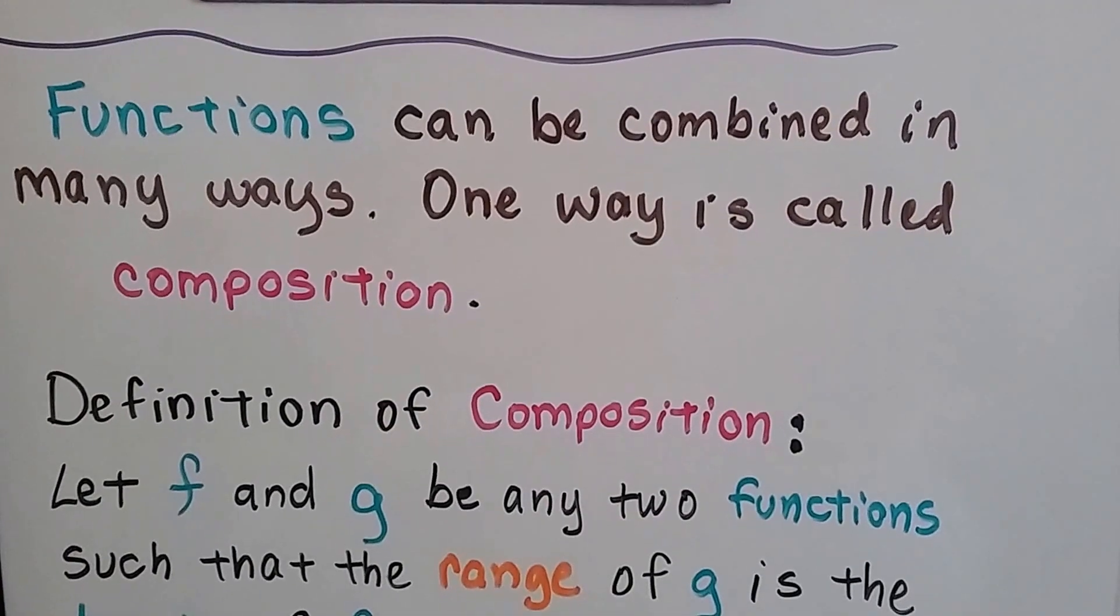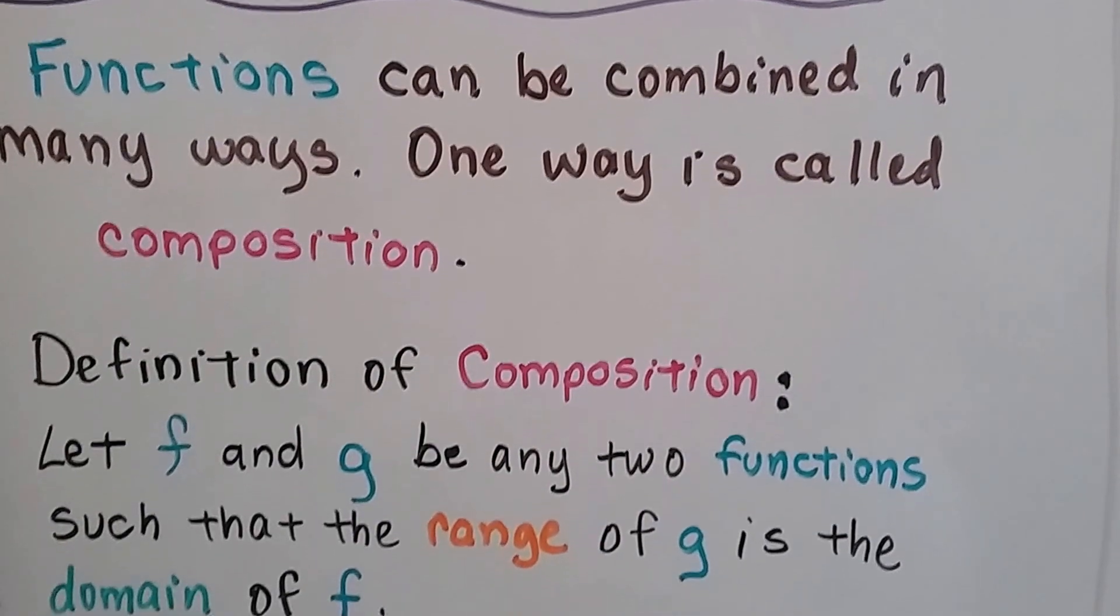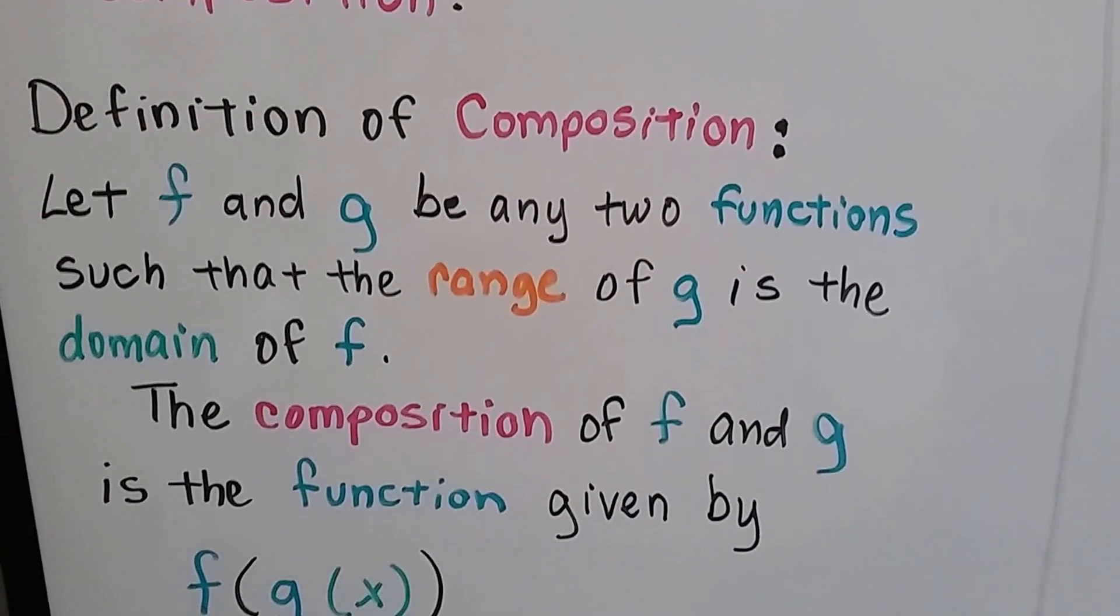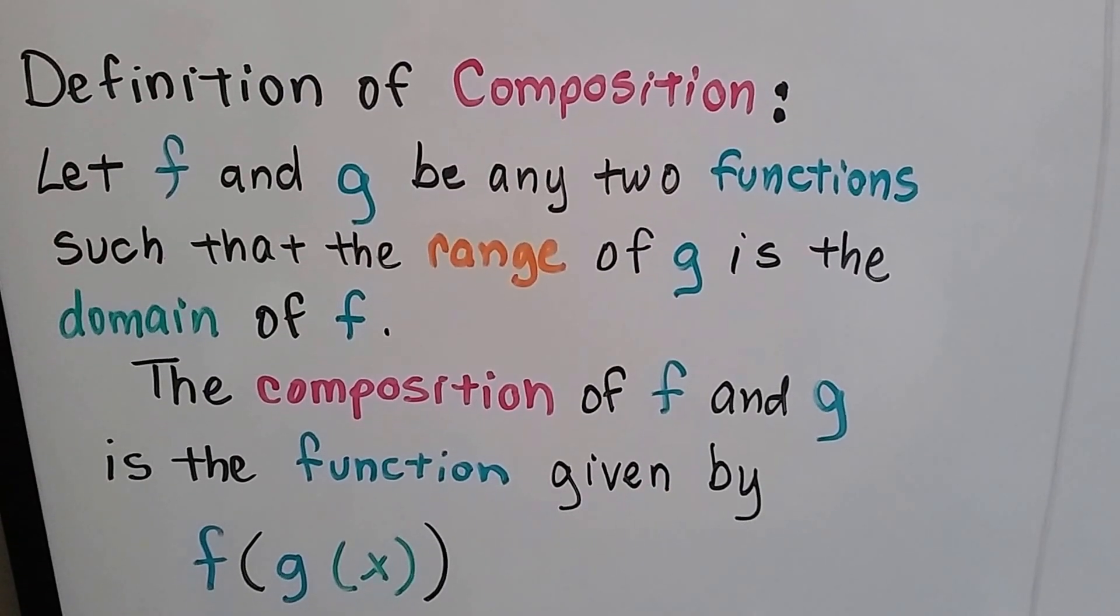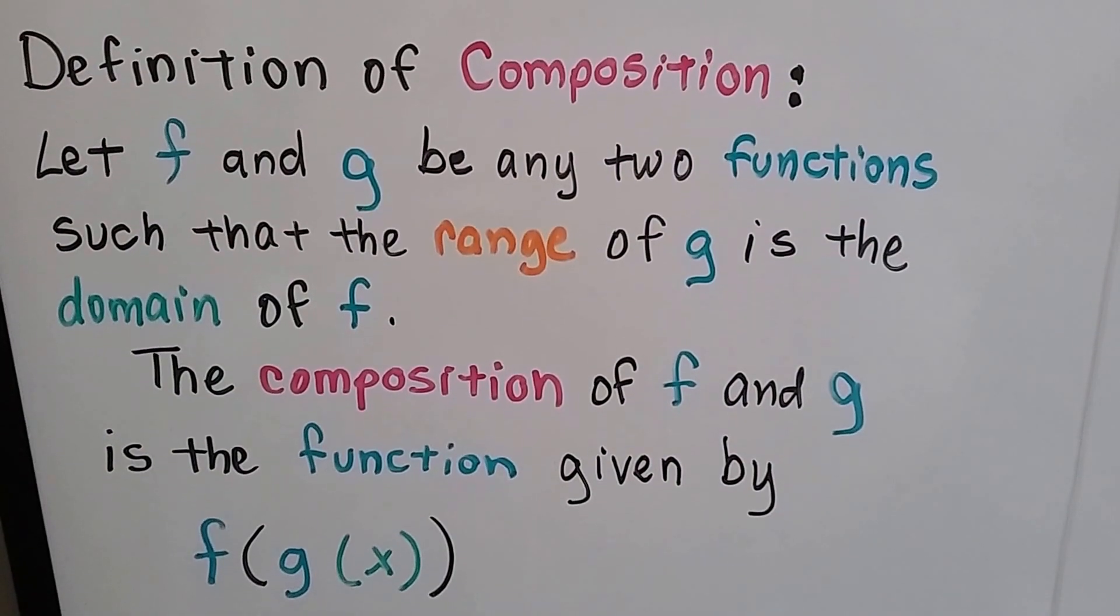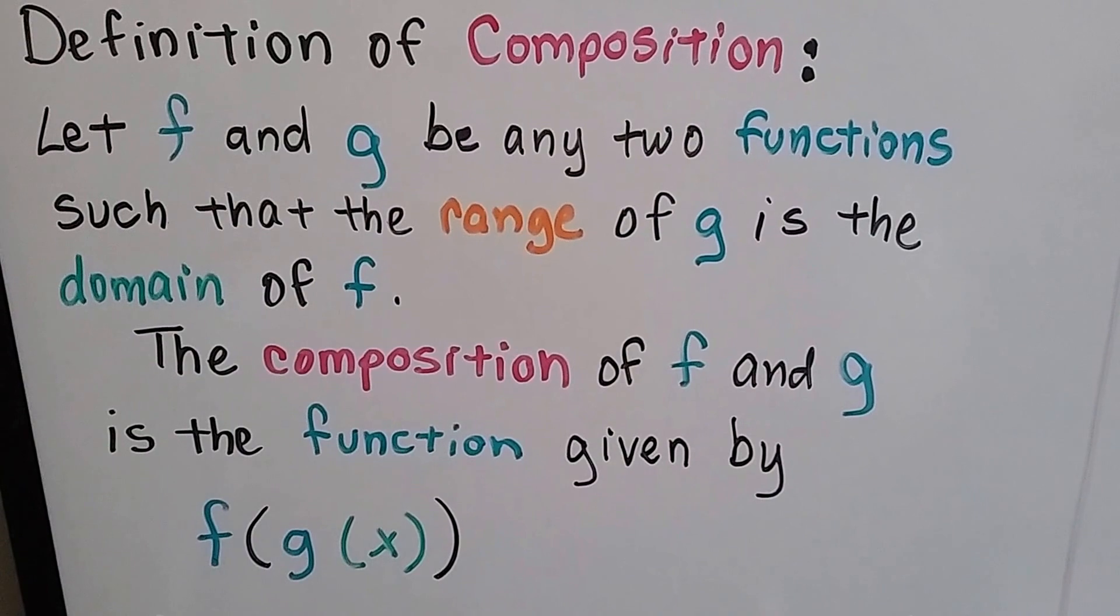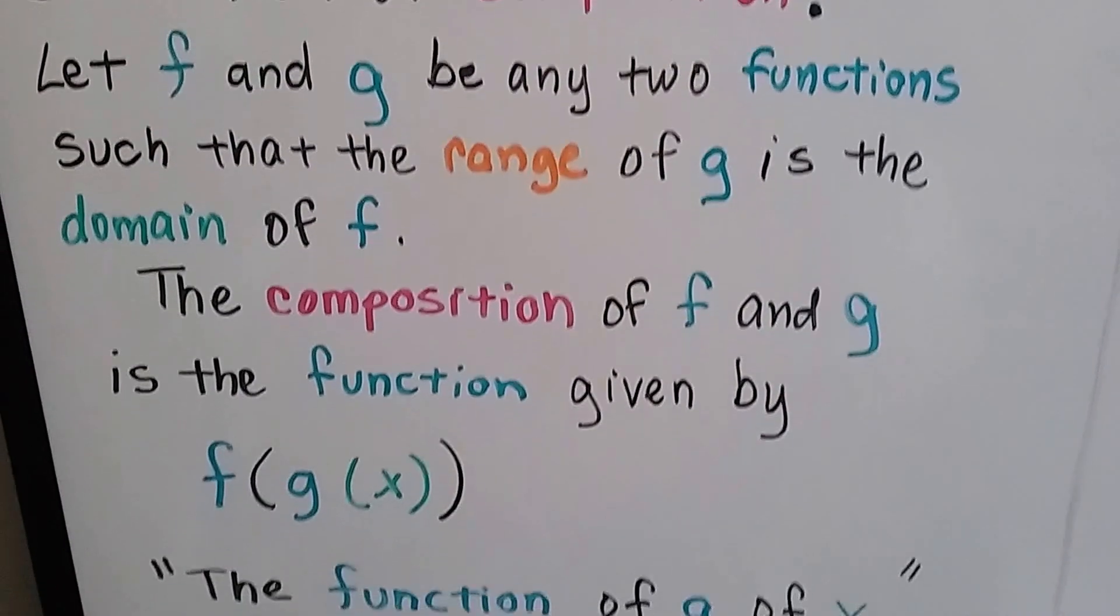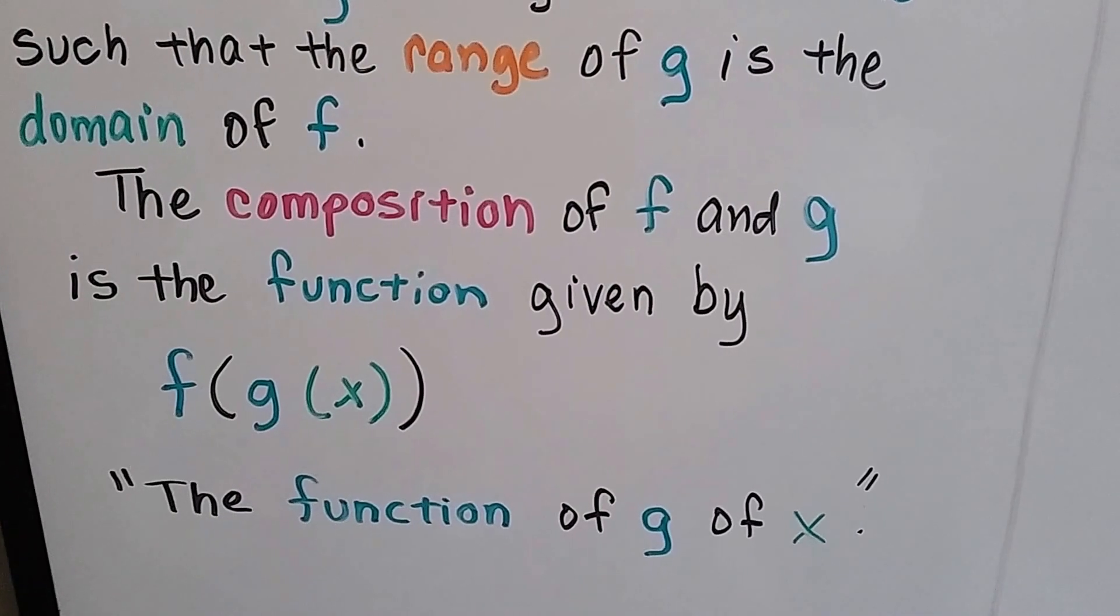Functions can be combined in many ways. One way is called composition. Here's the definition of composition. If we let f and g be any two functions such that the range of g is the domain of f, the composition of f and g is the function given by the function of g of x. So it's read as the function of g of x.